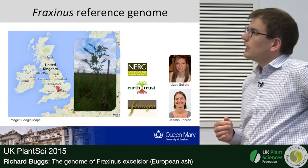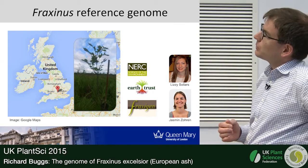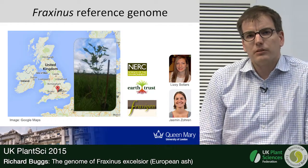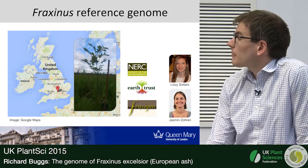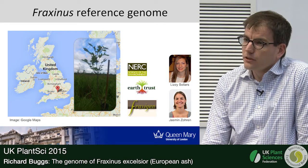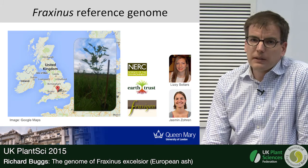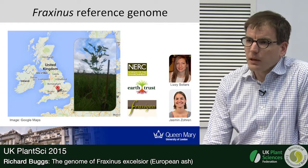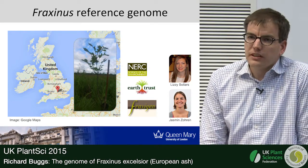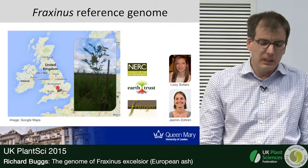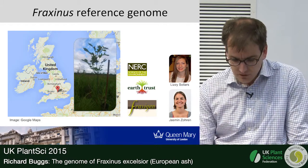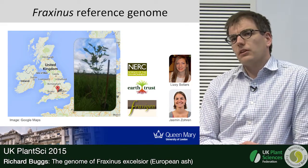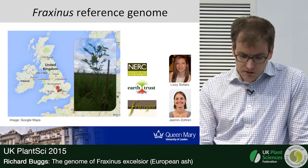We chose to sequence a very small and not particularly impressive-looking tree growing at the Earth Trust in Oxfordshire, because it's the product of a self-pollination — done in a European-funded experiment about ten years ago on breeding systems in ash. David Bowshire, who did the experiments, kept the materials just in case they came in useful at some point, and thankfully they did. We were able to sequence a genome that had very low heterozygosity, which made our assembly of the genome much simpler than it would have been otherwise.